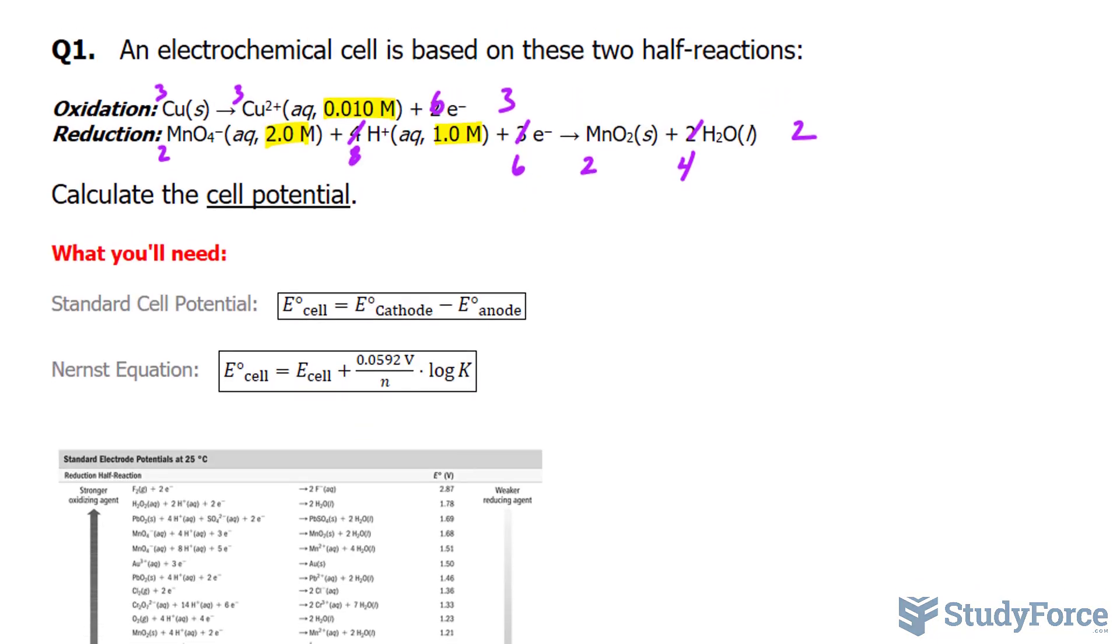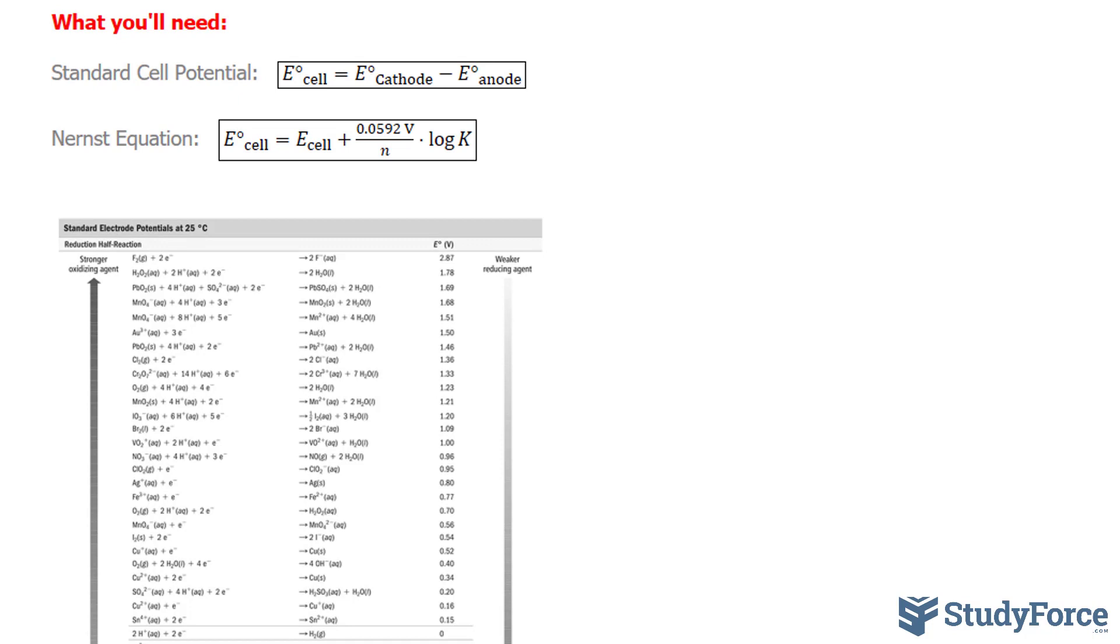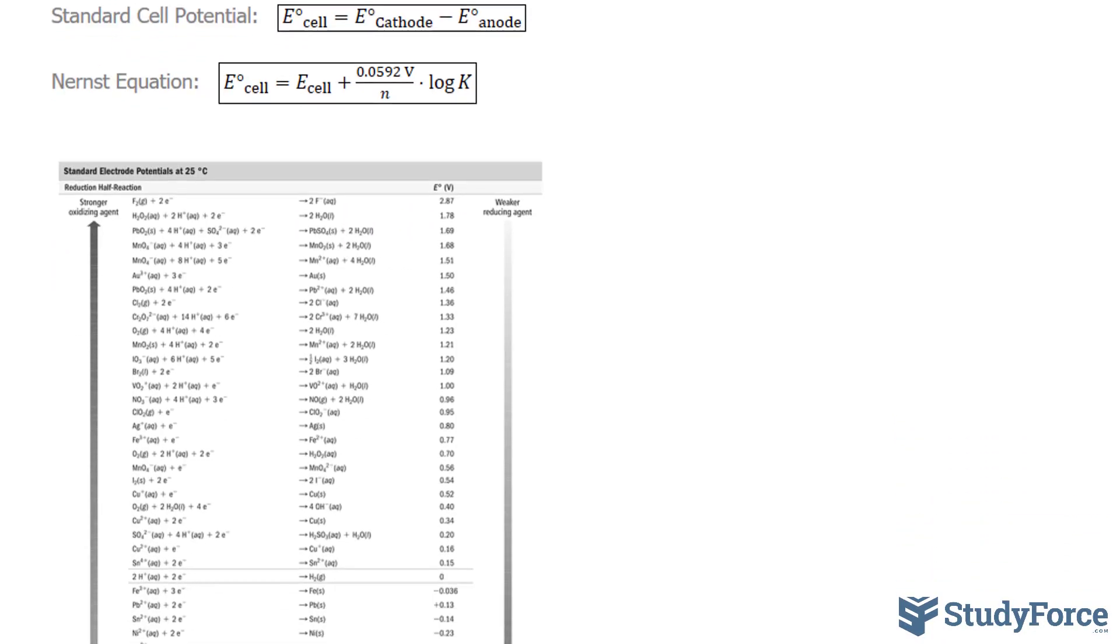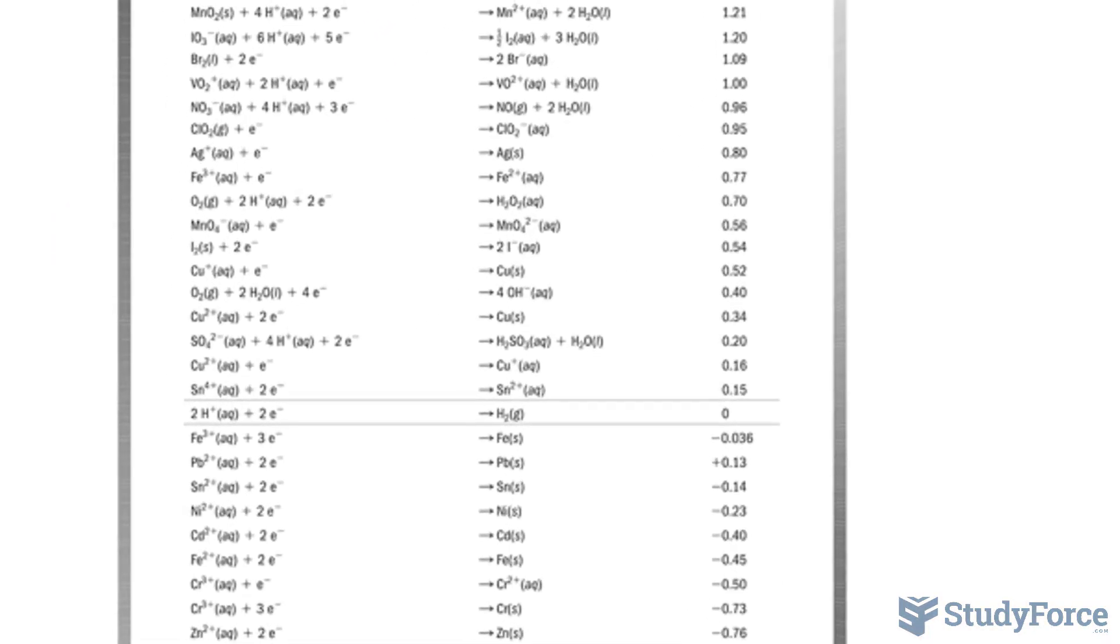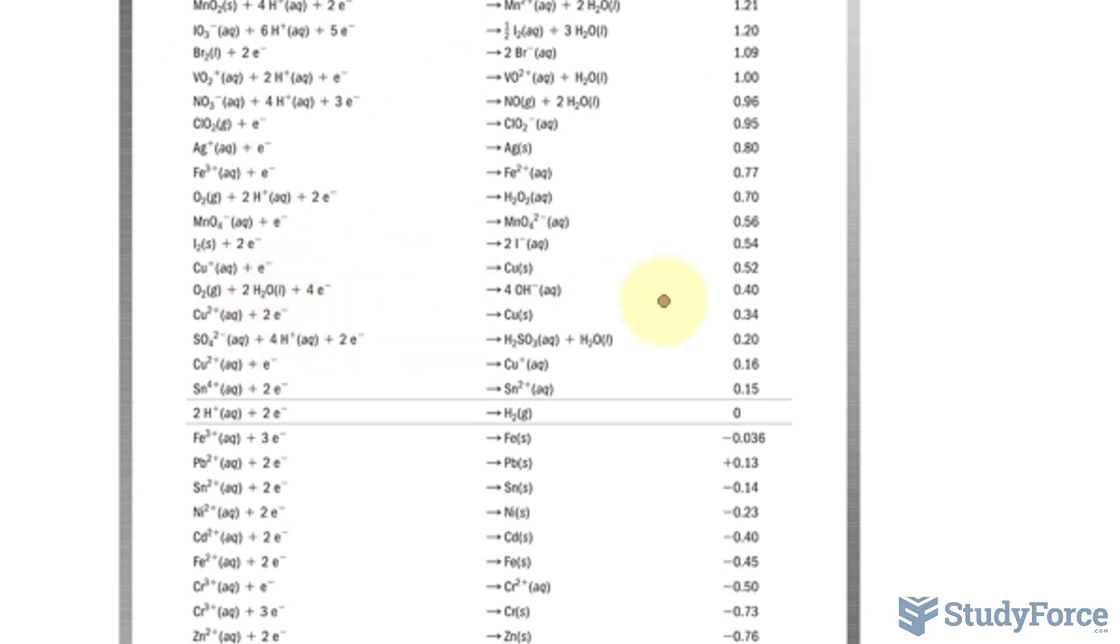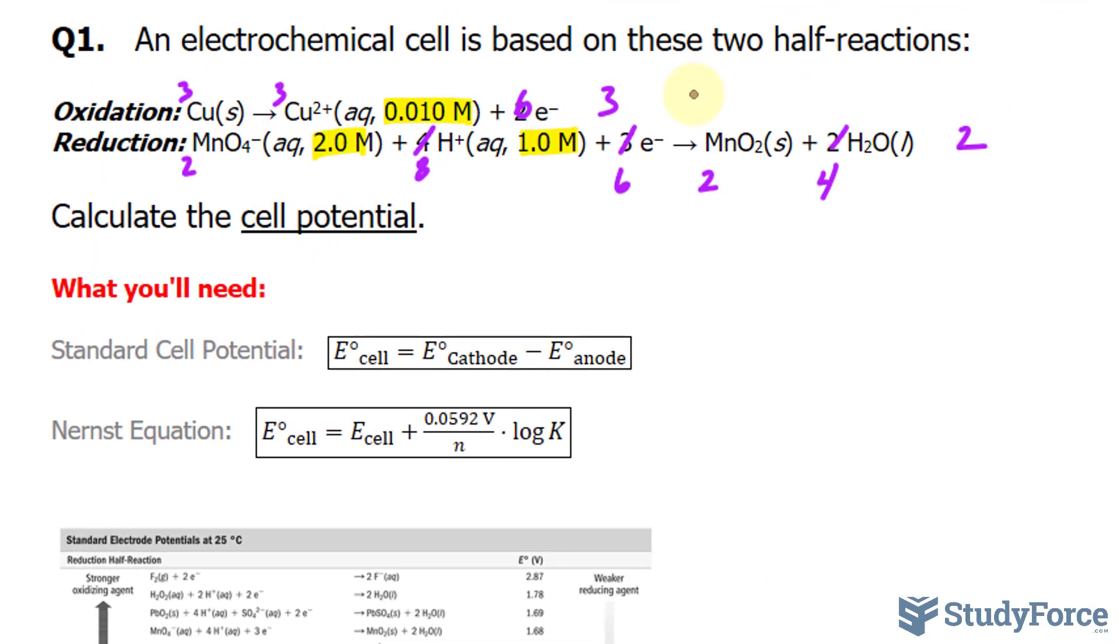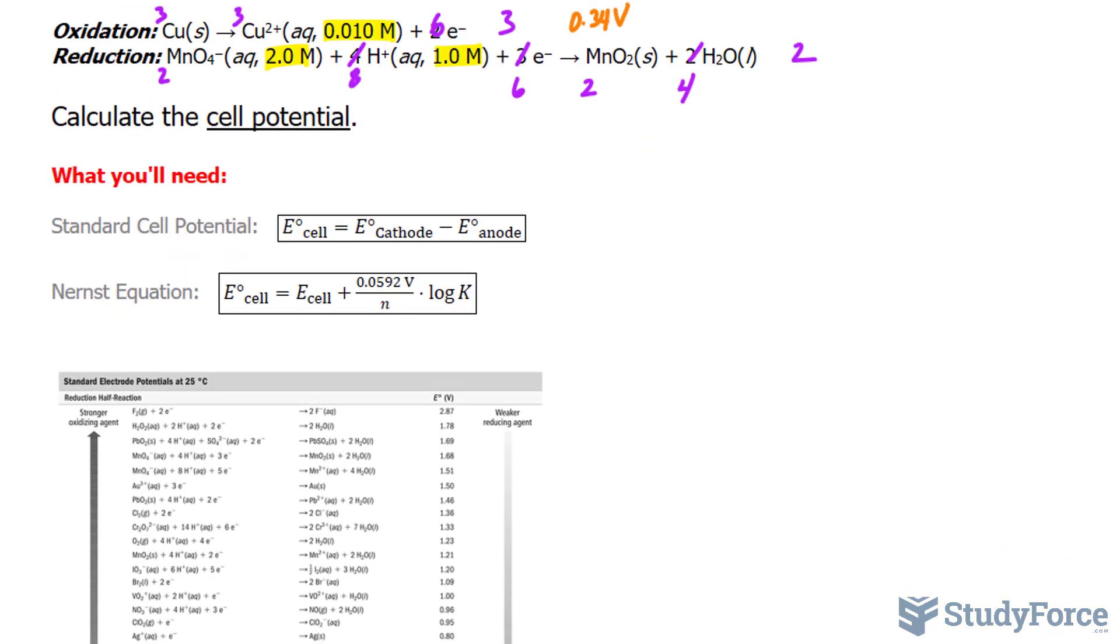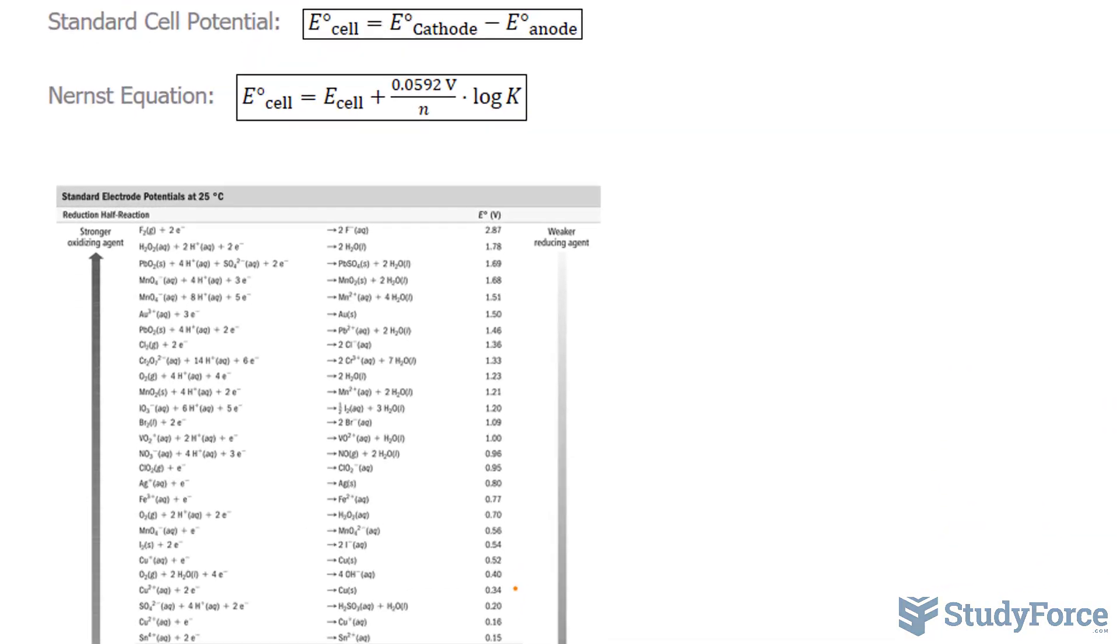But before I do that, I also want to take a look at this chart which tells me the standard electrode potentials for each of these. So let's go ahead and find Cu, Cu²⁺, yielding the two electrons. And I think that's located right here, 0.34 volts. So this has a standard electrode potential of 0.34 volts. And this one, we also need to locate that, MnO₄⁻. That's found right here.